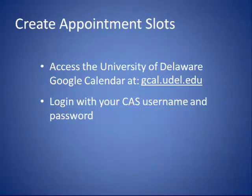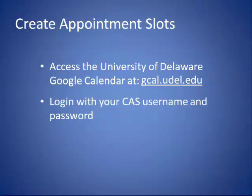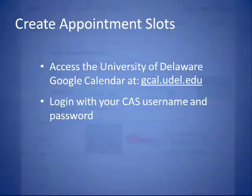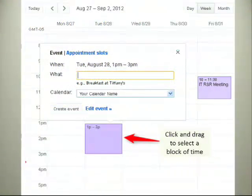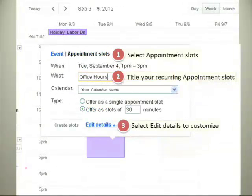To access the University of Delaware Google Calendar, go to gcal.udel.edu and log in with your CAS username and password. Click and drag to select a block of time — here it's 1 to 3 p.m. Then switch from event to appointment slots.